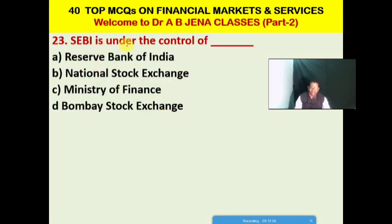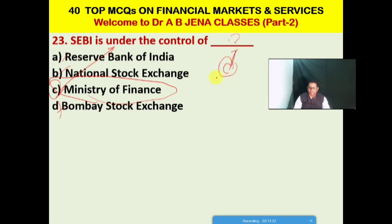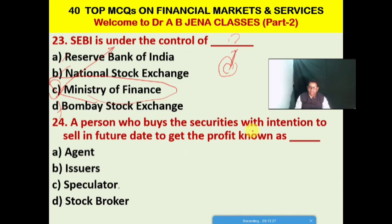Next MCQ: SEBI is under the control of dash. A: Reserve Bank of India, B: National Stock Exchange, C: Ministry of Finance, D: Mumbai Stock Exchange. C is the right option — SEBI is under the control of the Ministry of Finance, Government of India. Next MCQ: a person who buys securities with the intention to sell in the future to get profit is known as what? C is the right option — such a person is known as a speculator.